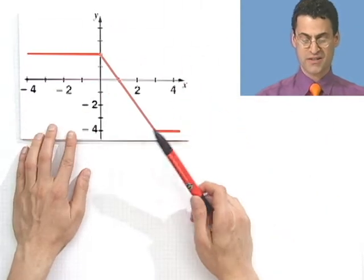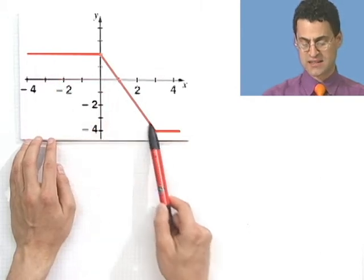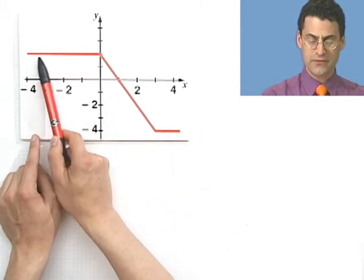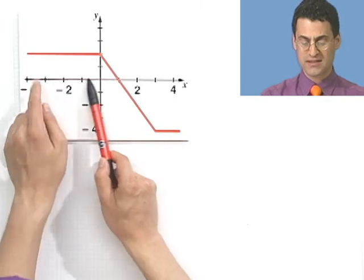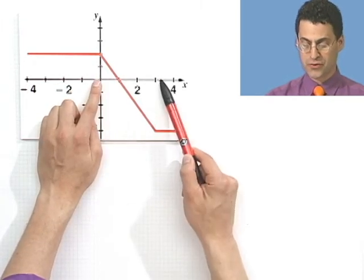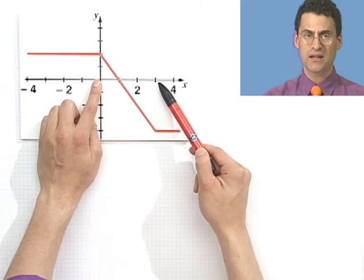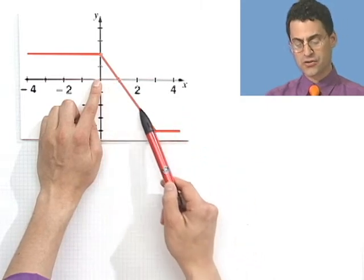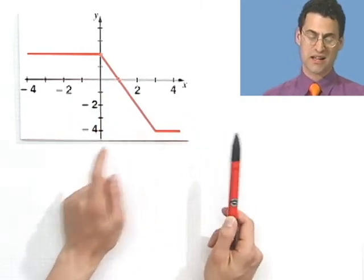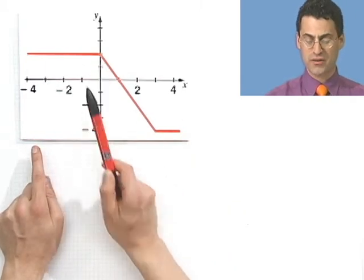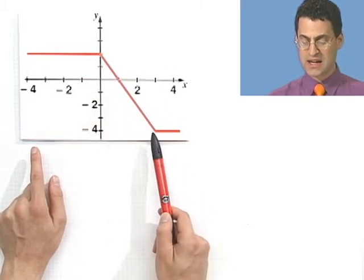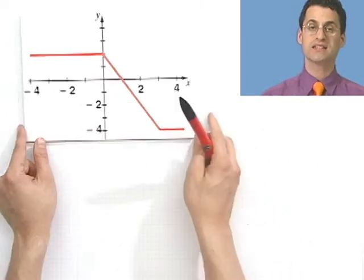Here's a function that's very kinky — it kinks, and then kinks again. From negative infinity to x equals 0, it's constant. Then from 0 to 3, it's decreasing. And then from 3 onward, it's constant again. So: constant to x equals 0, decreasing from 0 to x equals 3, and then constant from 3 to infinity.